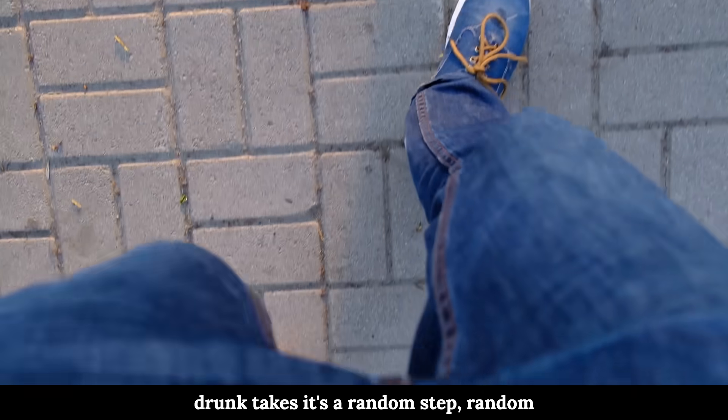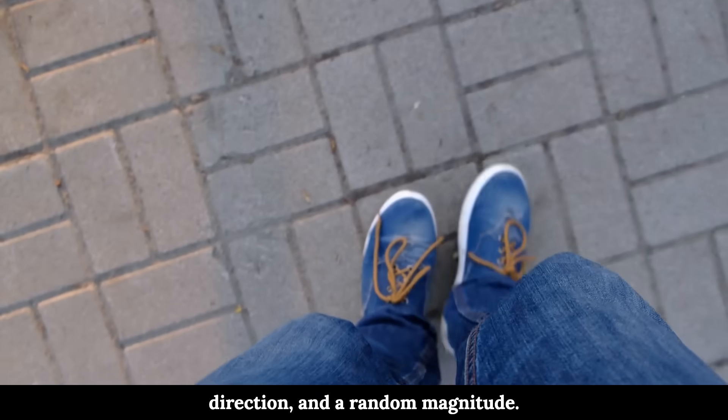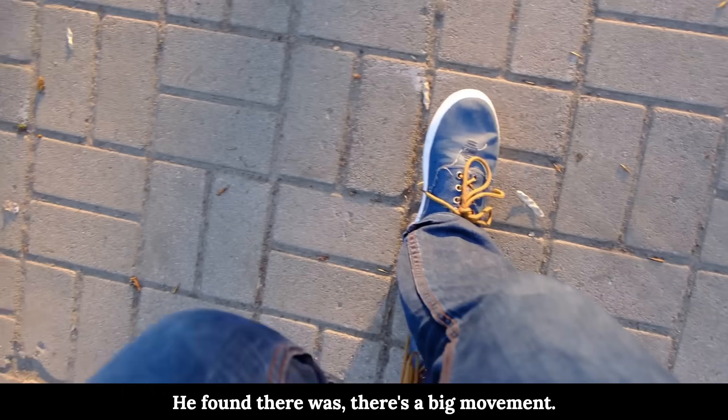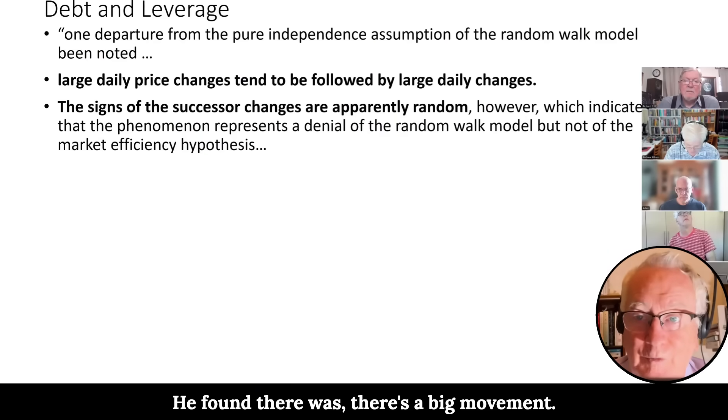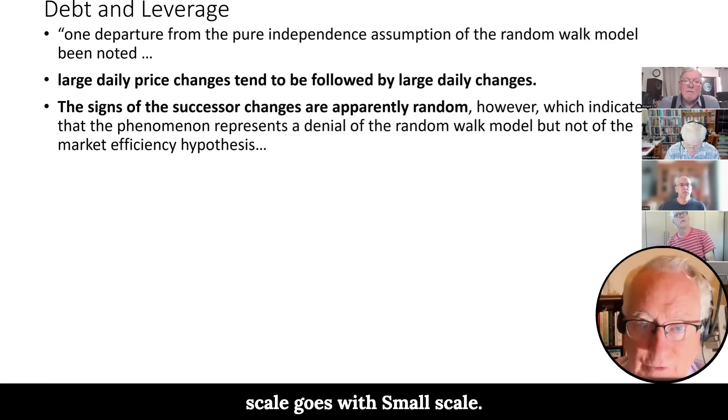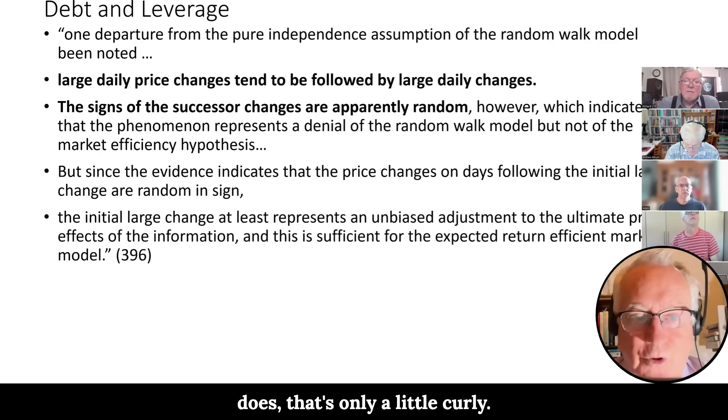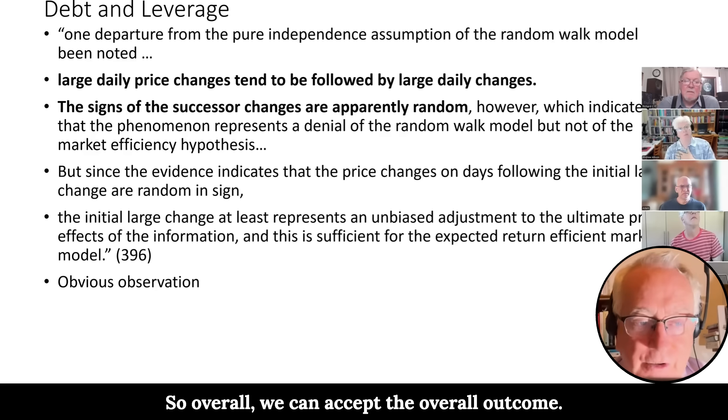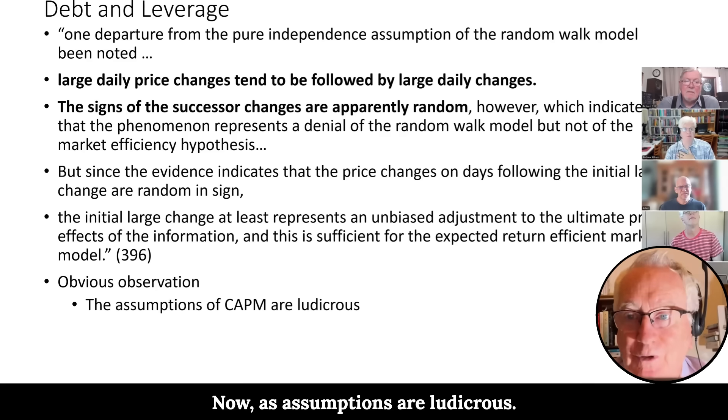Because the random walk, each time the drunk takes a step, it's random step, random direction and a random magnitude. There should be no relationship from one step to another. He found there was. If there's a big upward movement, there'd be a big upward or downward movement the next day. Large scale goes with large scale, small scale goes with small scale. But he basically said, oh, that's only a little curly. You know, one cancels out the other. So overall we can accept the overall outcome. Now as I said, the assumptions are ludicrous. So why the hell did he find a good fit? What's going on to explain that?